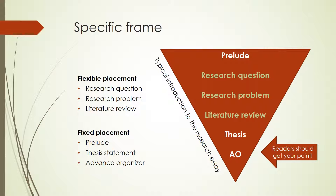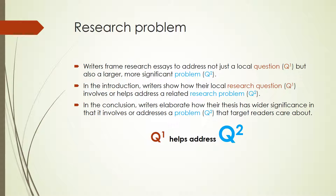What is the research problem? It is simply a big, significant question that generates debate and motivates writing among experts and scholars. It is a question that target readers care about. Therefore, writers frame research essays to address not just a local question, but also a larger, more significant problem. The research problem is usually more general, theoretically significant, and consequential, having wider implications or applications. In the introduction, writers show how their local research question about a topic involves or helps address, even in a very small way, a related research problem. It is the problem that motivates readers. In the conclusion, writers elaborate further how their thesis has wider significance in that it addresses a problem that target readers care about. In other words, to answer the local research question, a researcher must navigate through and address the larger research problem.